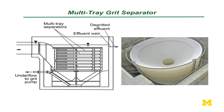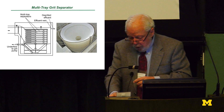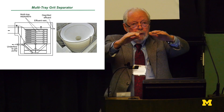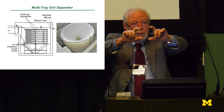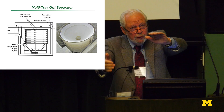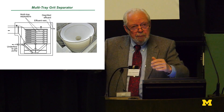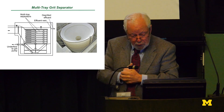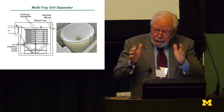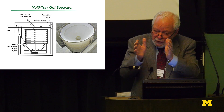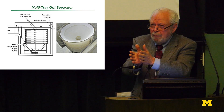One application that has proven successful is the tray separator. The wastewater flows in and is distributed among all the trays. The key is that the grit only has to fall about two inches before it hits the surface and is removed. It's based on a design with grit of about 1.35. We put these things in for years without ever thinking about the fundamentals.